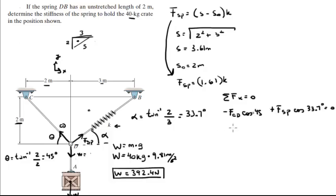So you get that the force F_CD is equal to the force of the spring times the cosine of 33.7 over the cosine of 45.